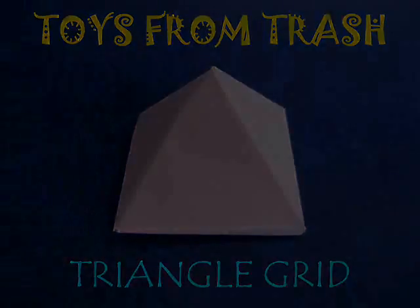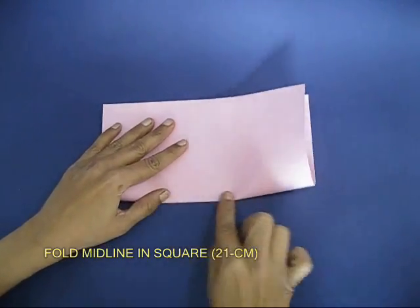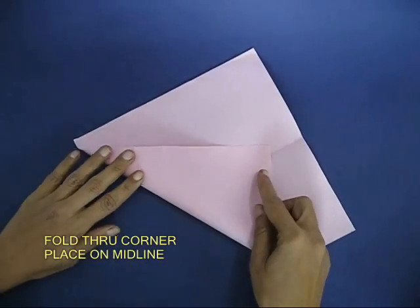Starting from a square you can make a triangular grid. This square is folded from the largest size of A4 size paper, 21 cm. Find the midline.